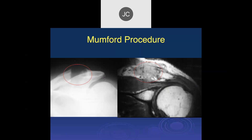The Mumford procedure must preserve the coracoclavicular ligaments — interfering with those causes major problems. Despite the declining belief in impingement as a concept, the Mumford procedure remains a fairly effective treatment for pain from degenerative disease of the acromioclavicular joint.